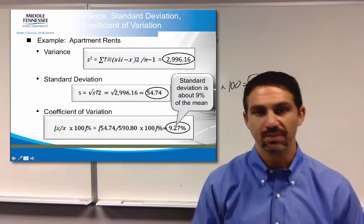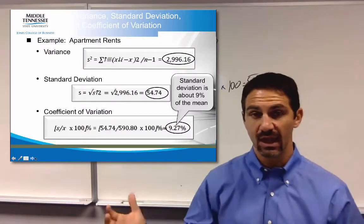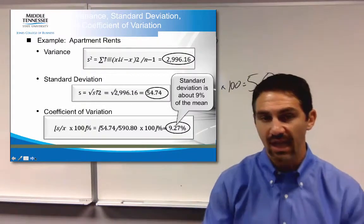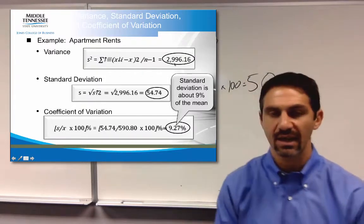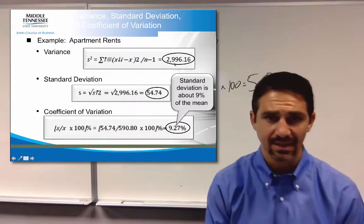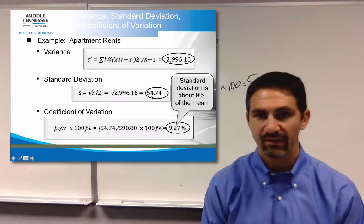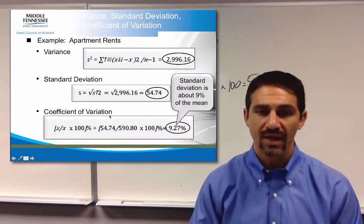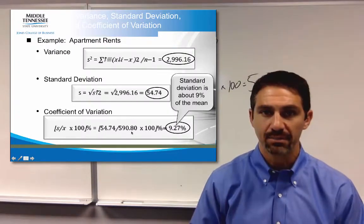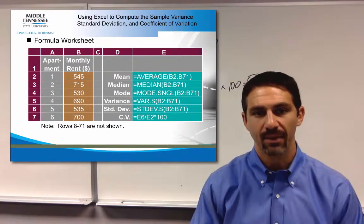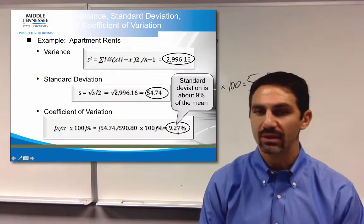So looking at this in terms of your apartment, again, you can go ahead and calculate it out for the sample size of 70. And I want you to do this, and you'll see that you'll get a variance of 2,996.16. Standard deviation then is just the square root of that value, which is 54.74. You then take the standard deviation, divide it by your sample mean, multiply it by 100, and that's where you get that 9.27%.